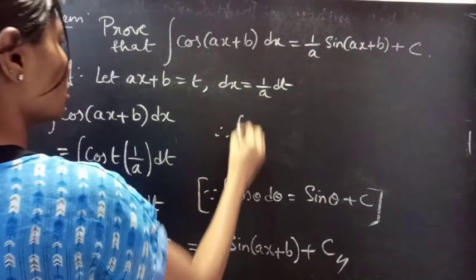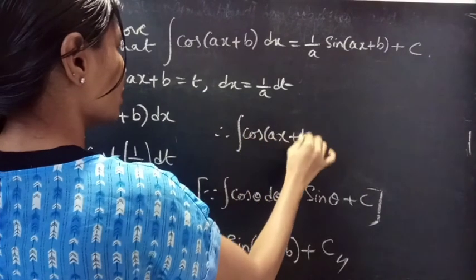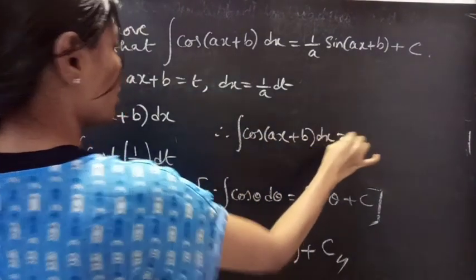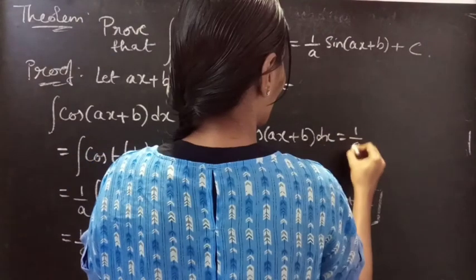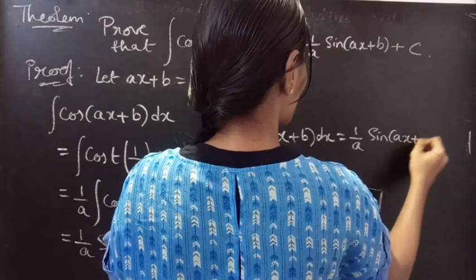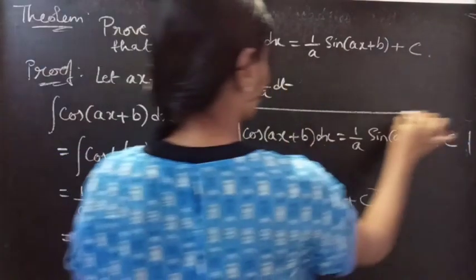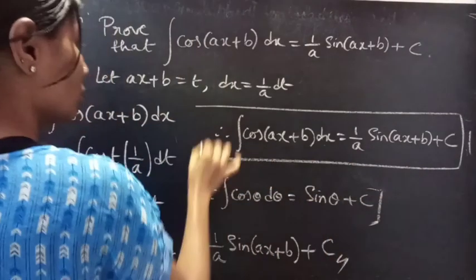Therefore, integral cos(ax+b) into dx equals to 1 by a into sin(ax+b) plus integral constant C. This completes the theorem.